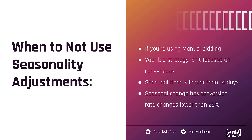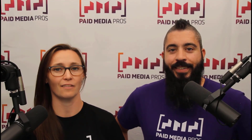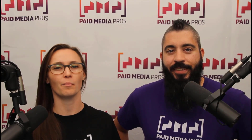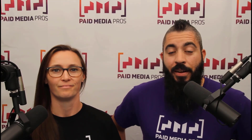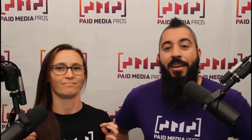Overall, these can be really impactful adjustments for your account, but you just need to use them in scenarios where they make the most sense. They don't take a lot of time to set up, but you want to make sure you have all the right bid strategies in place for the right campaign types to make sure seasonality adjustments will work for you. If you have any additional questions about seasonality adjustments or anything else in the Google Ads interface, let us know in the comments below. Thanks for watching — if you liked it, give us a thumbs up, and consider subscribing to the Paid Media Pro's YouTube channel.